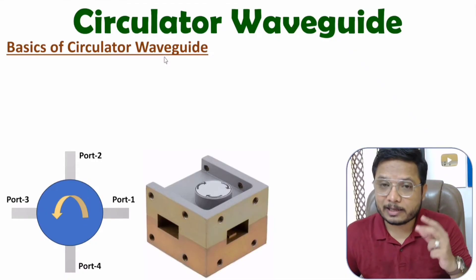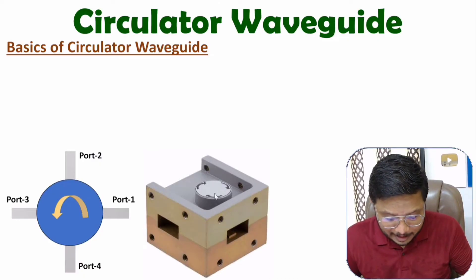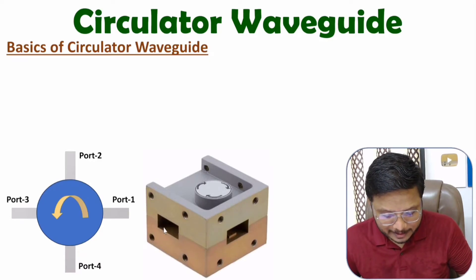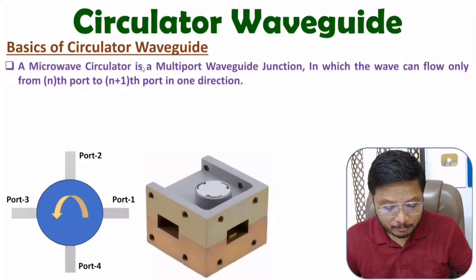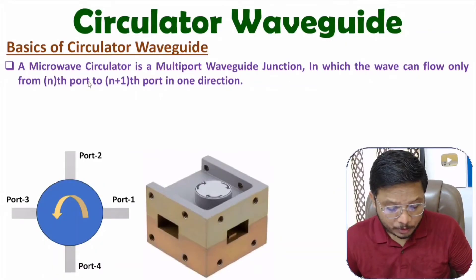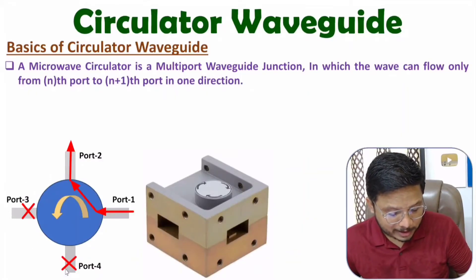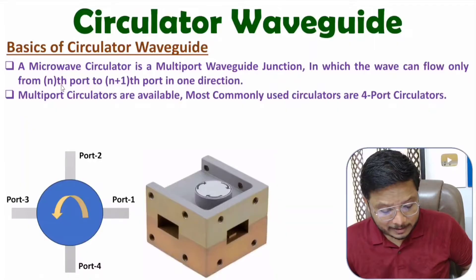In your laboratory you might have seen a three-port circulator where an arrow shows the direction of signal circulation. If you give input at one port, output appears at the next port in the direction of the arrow. The circulator waveguide is a multi-port waveguide junction where signal can flow from the nth port to the (n+1)th port in one direction only.